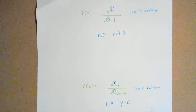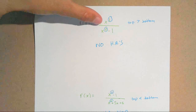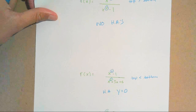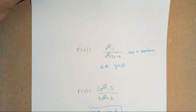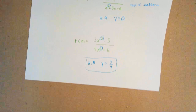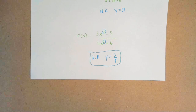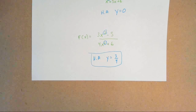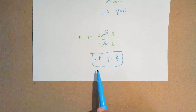To recap: in the first example, the degree on top was greater than the degree on the bottom, so no horizontal asymptotes. In the second, the degree on top, which was one, is less than the degree on the bottom, which is two, so the horizontal asymptote is y equals zero. And lastly, when both exponents are the same, divide the leading coefficients — three over four — so the horizontal asymptote is y equals three over four.